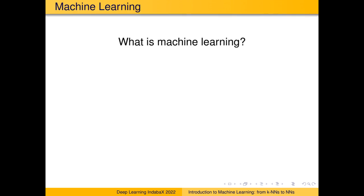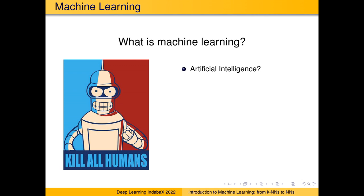We want to talk about basics of machine learning. Before going into definitions, let's start with the biggest umbrella term: what exactly is machine learning? Is it perhaps another name for artificial intelligence? In my opinion, yes — the two are quite similar. Machine learning is basically the means by which we hope to achieve artificial intelligence, though these things are somewhat philosophical.